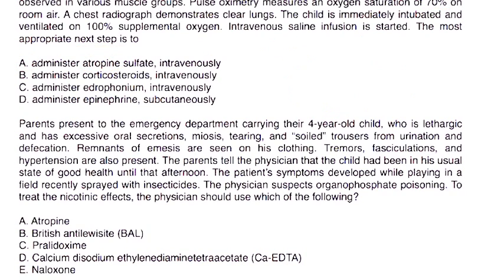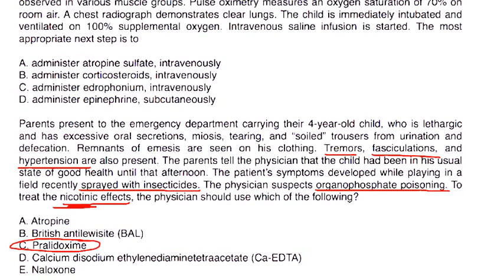Clinical vignette 2: Parents bring their 4-year-old to the ED with lethargy, excessive oral secretions, miosis, tearing, urination, defecation, emesis, tremors, fasciculations, and hypertension. The child was playing in a field recently sprayed with insecticides. The physician suspects organophosphate poisoning. The question asks which drug treats the nicotinic effects — since fasciculations and hypertension are nicotinic symptoms, the answer is pralidoxime, also known as 2-PAM.